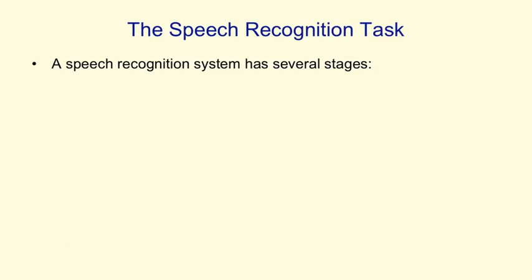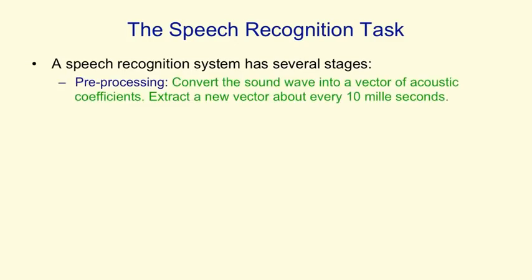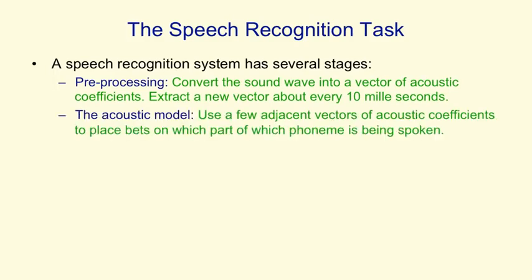Another task that neural nets are now very good at is speech recognition, or at least part of a speech recognition system. Speech recognition systems have several stages. First, they preprocess the sound wave to get a vector of acoustic coefficients for each 10 milliseconds of sound wave — that's 100 vectors per second. They then take a few adjacent vectors of acoustic coefficients and need to place bets on which part of which phoneme is being spoken.